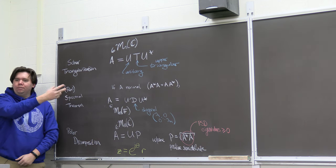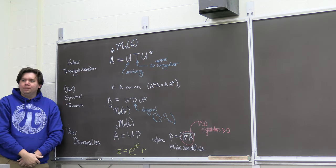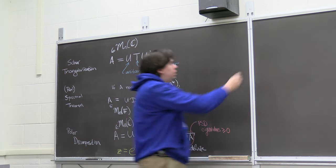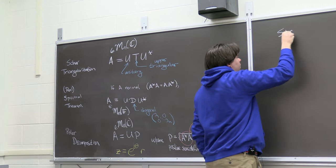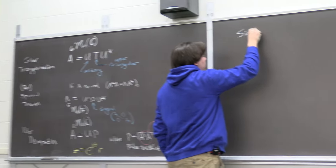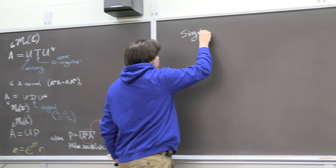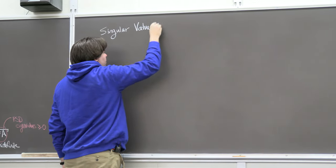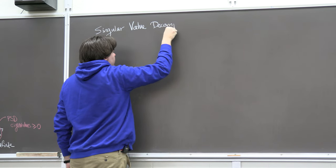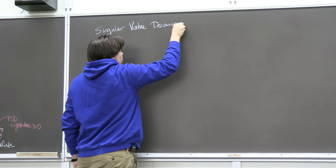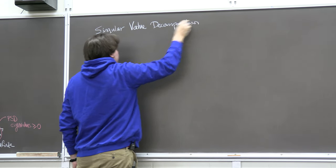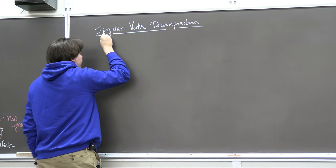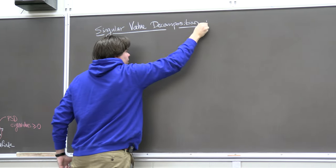I'm going to give you the result right now, then say a few words about why some of these are special cases, prove the theorem, and give an example. This is called the Singular Value Decomposition, and this is our theory of everything for linear algebra.